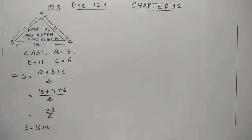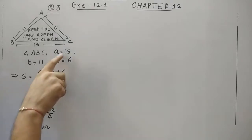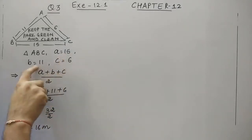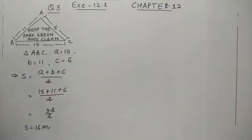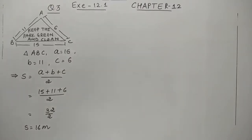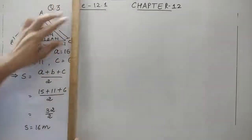As we discussed earlier, the semi-perimeter is always larger than all the individual sides. The largest side is 15, so the semi-perimeter must be greater than 15. And it is — that means you have done it correctly.